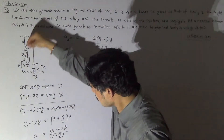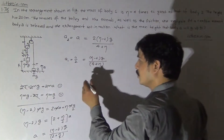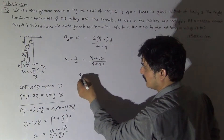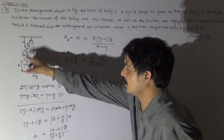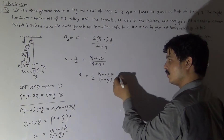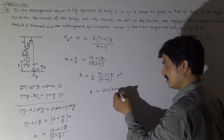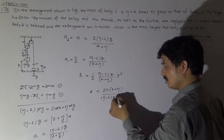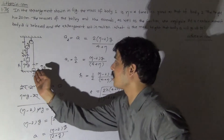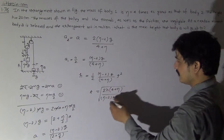We need to calculate the time for block 1 to reach the ground with acceleration A/2. Using h equals half times acceleration times t squared: h equals half times (eta minus 2)g/(4 plus eta) times t squared. Solving for t: t equals the square root of 2h(4 plus eta) divided by (eta minus 2)g. This is the time taken by block 1 to reach the ground.